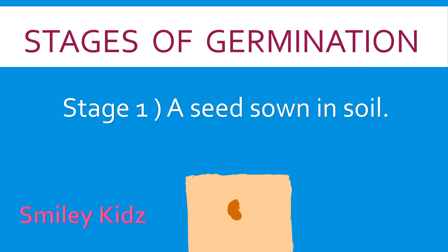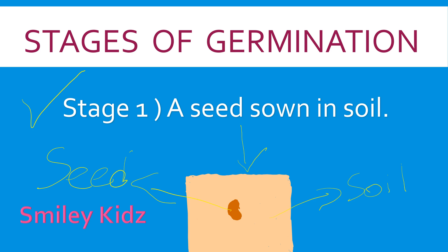Stages of germination. Stage 1: A seed is sown in soil, which you can see here. This is the soil and this is the seed. A seed sown in soil needs a sufficient amount of water, light, warmth, and air to grow.